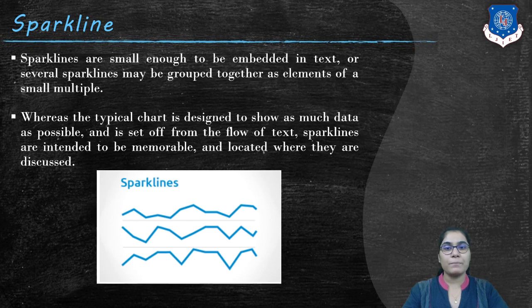Sparklines are small enough to be embedded in text, or several sparklines may be grouped together as elements of a small multiple. So we can either plot a single sparkline or we can plot a group of sparklines to show the variation of our data. Whereas the typical chart is designed to show as much data as possible and set off from the flow of text, sparklines are intended to be memorable and located where they are discussed. So the main purpose of the sparkline is to show the historical data.